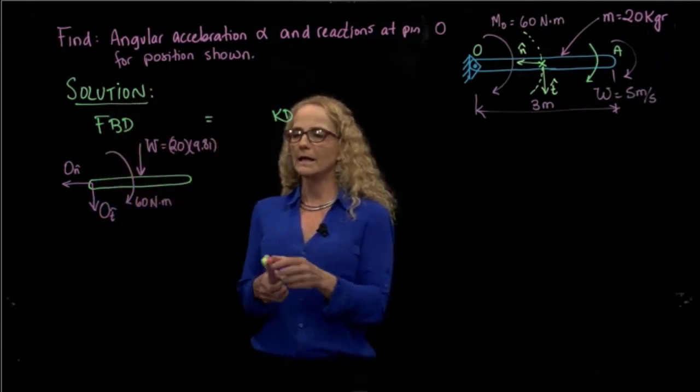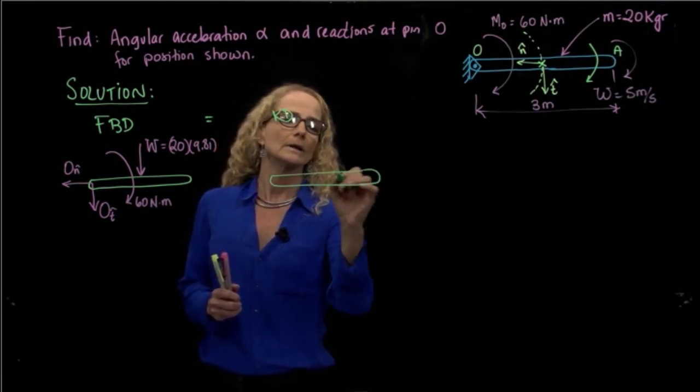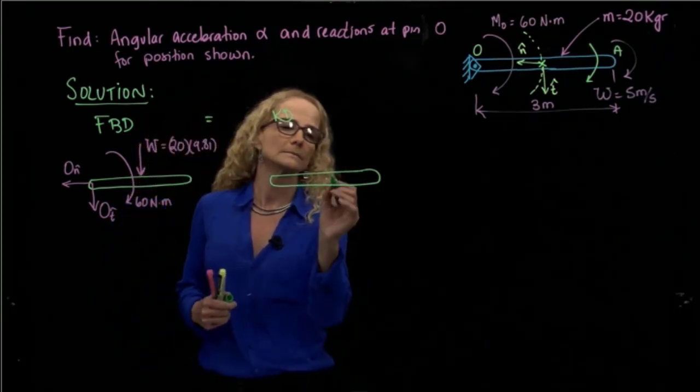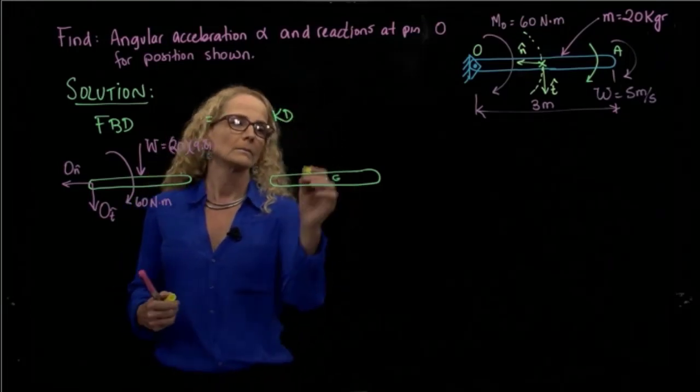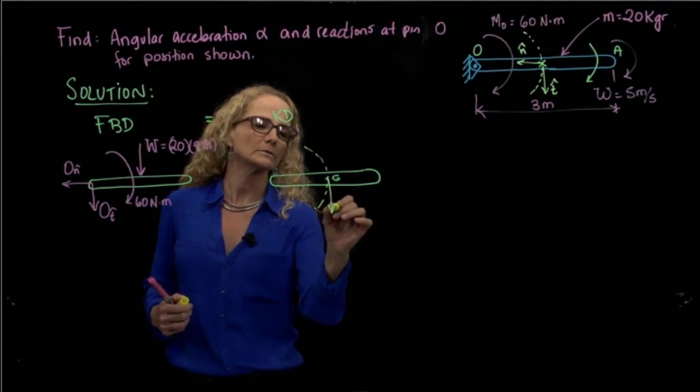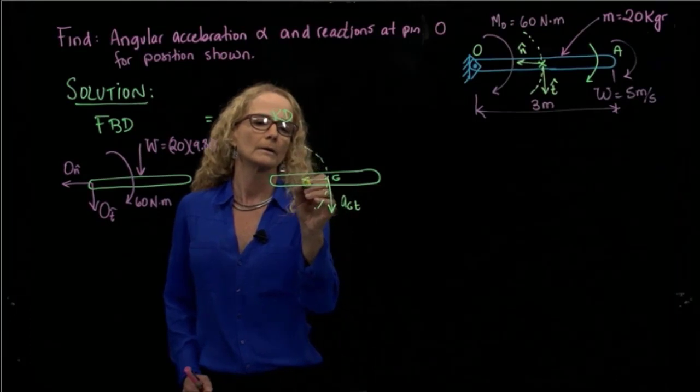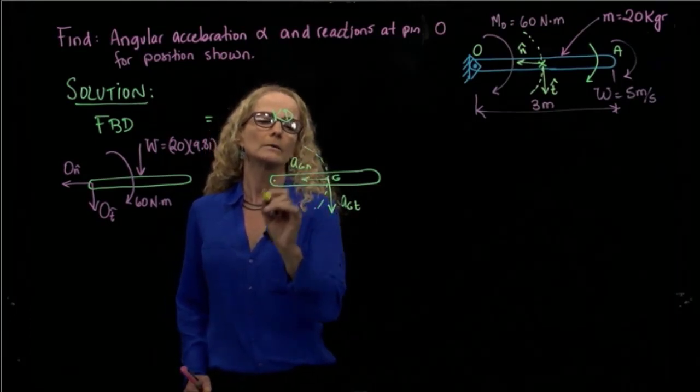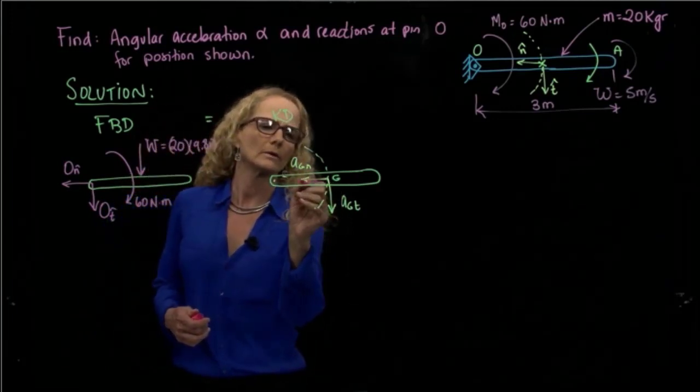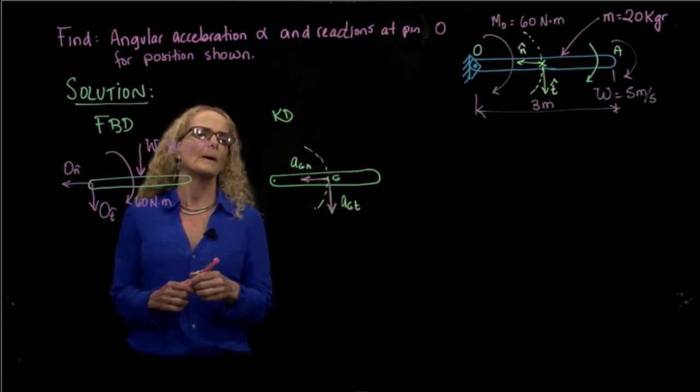And then I have the kinetic diagram. The kinetic diagram, as we said, we have in our center of mass, we have two accelerations. We have our tangent acceleration and our normal acceleration. And we do not have to draw any other, let me draw it in another color, so to make sure that we understand these are the two accelerations for a circular path.